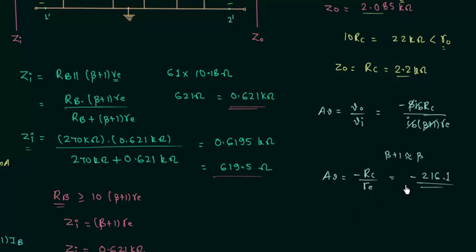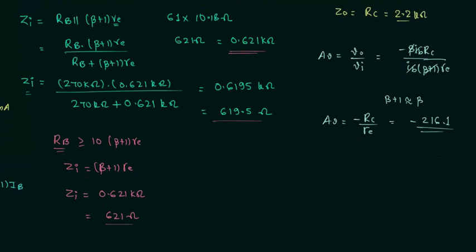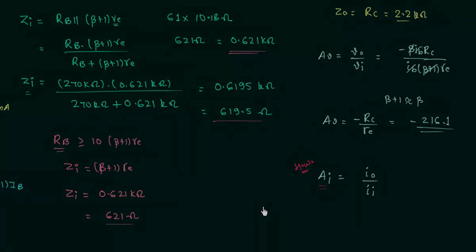This phase shift is something we have already covered in the last lecture. Now we move to the last part of this lecture in which we calculate the current gain. The current gain equals the ratio of output current to input current, and its calculation is the homework problem. Calculate the current gain and post your answer in the comment section. This is all for this lecture — see you in the next one.